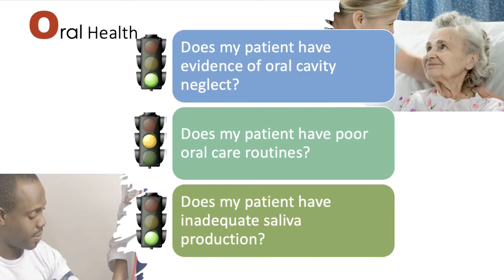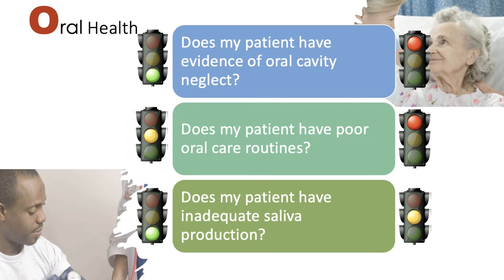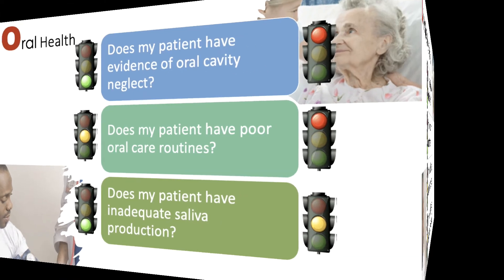Next, let's look at oral health for these patients. Our first patient does need assistance with oral care, but his oral health is pretty good at baseline and he has an excellent support system — so we're not too worried about that for this gentleman. We'll be able to compensate until he's hopefully able to do it on his own. For our elderly lady, she has evidence of poor oral care and is dependent on others for her oral care routine. We don't know much about her saliva, but with her age, we're assuming there's probably some compromise in saliva production.